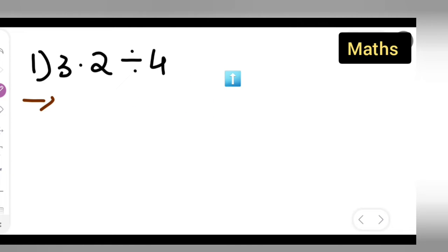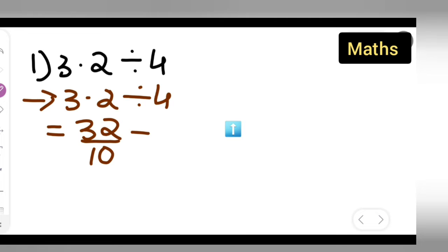Now, how are we going to do this? First, write down 3.2 divided by 4. Now this is equal to what? 3.2 is given, and it is a place of 10. Only one decimal point is the first place, so write down 32 upon 10 divided by 4.